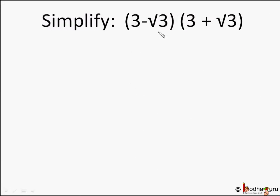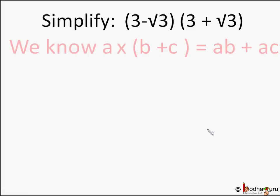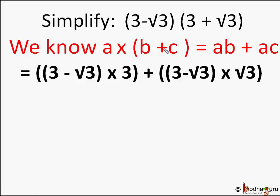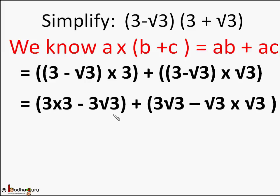Let us take another example: simplify (3 minus square root of 3) into (3 plus square root of 3). We use the same rule a into (b plus c) equals ab plus ac, but consider a as the entire (3 minus square root of 3). So we first multiply (3 minus square root of 3) by 3, and then multiply (3 minus square root of 3) by square root of 3, and then add the two products.